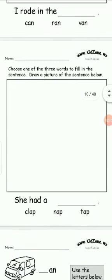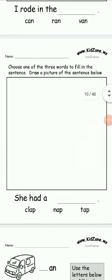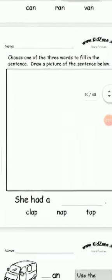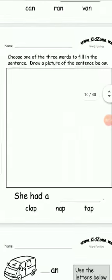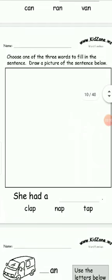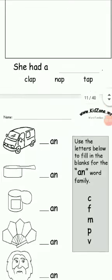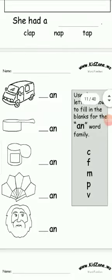Choose one of the three words to fill in the sentence. Draw a picture of the sentence below. She had a — clap? No. Nap? Okay. Draw a picture and then color it.